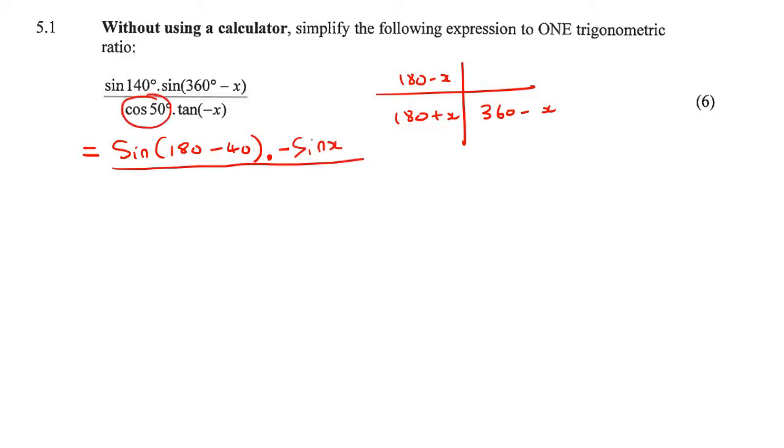Cos 50° is already as simplified as it can be, so we'll leave that alone. For tan(-x), you're not going to take the minus out as a common factor. Remember that's not the way it works. If it doesn't look like one of these,